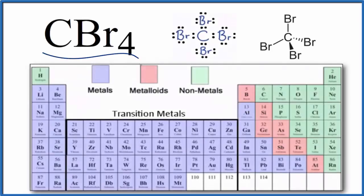To determine whether CBr4 is ionic or covalent, let's first look at the periodic table divided into metals, metalloids, and nonmetals.